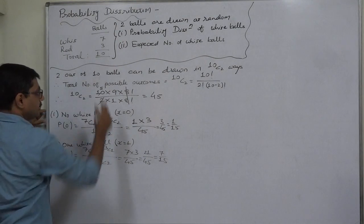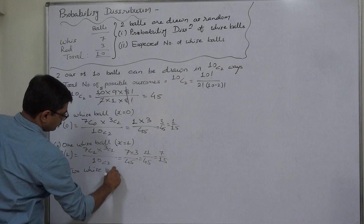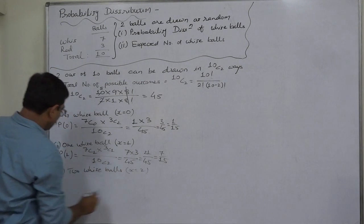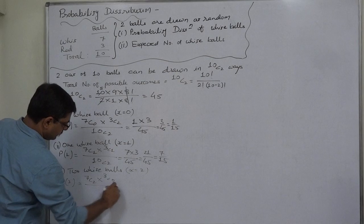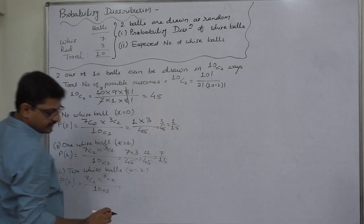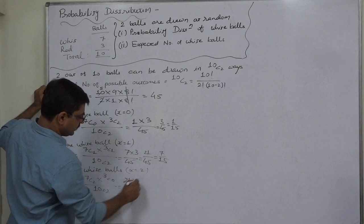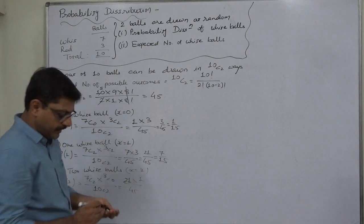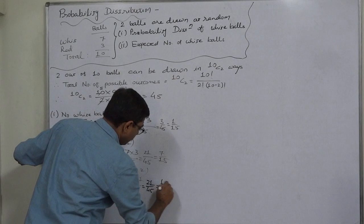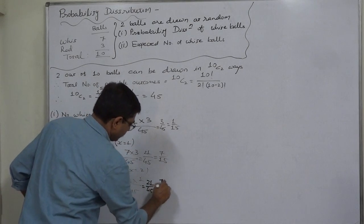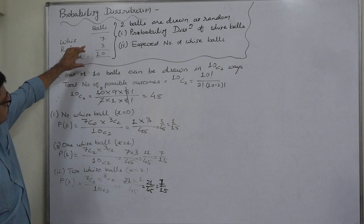The third possibility is all two balls drawn are white. The random variable X takes value two. The probability is 7C2 times 3C0 divided by 10C2. 7C2 equals 7 times 6 divided by 2, which is 21. 3C0 is 1, and 10C2 is 45. So P(X=2) equals 21/45, which simplifies to 7/15. These three are mutually exclusive and exhaustive cases.